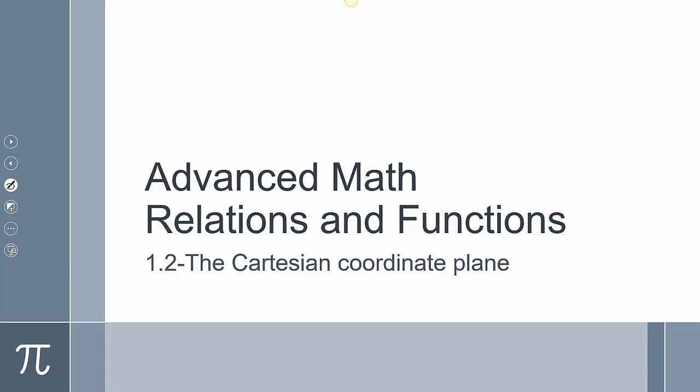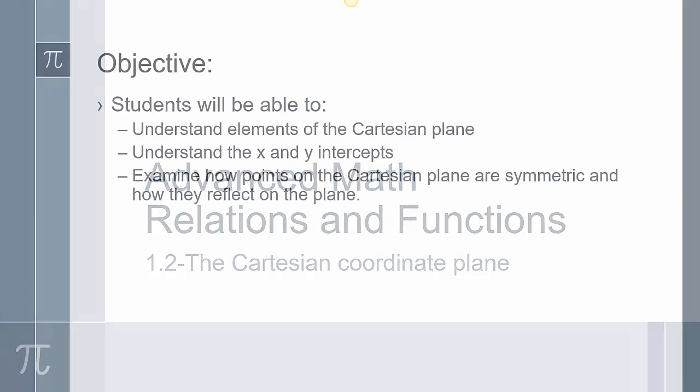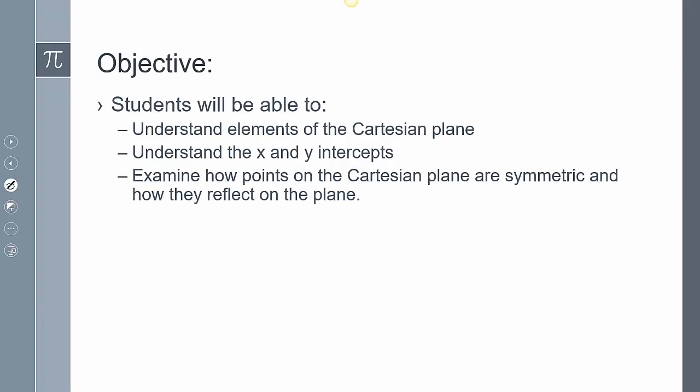Hello class. We're still in relations and functions. This is going to be 1.2, the Cartesian coordinate plane. Today's objectives: we're going to understand elements of the Cartesian plane, understand the x and y intercepts, and then examine how points in the Cartesian plane are symmetric and how they're going to reflect on that plane.